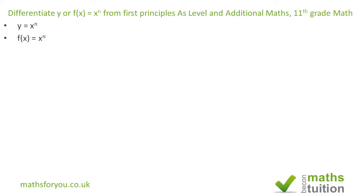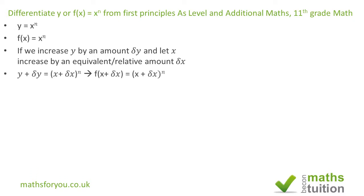If we increase y by a small amount δy and increase x by a relative amount δx, we end up with y + δy = (x + δx)^n.